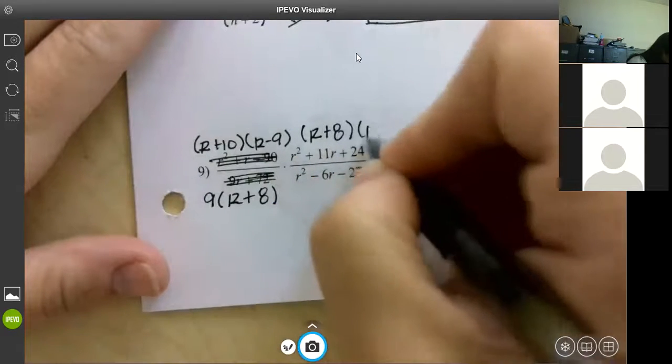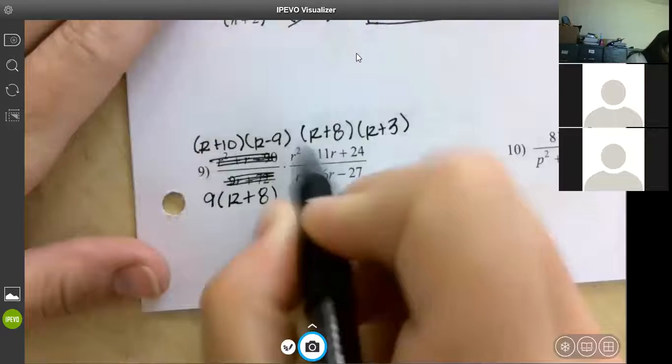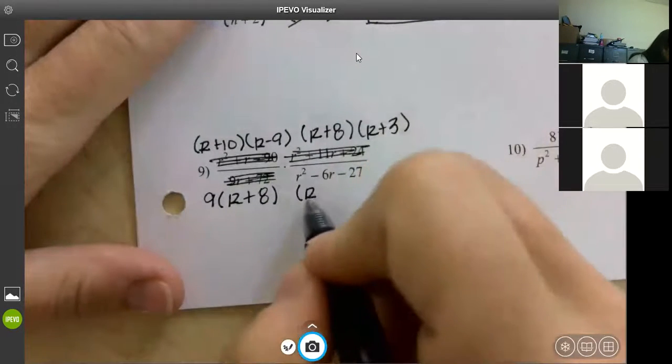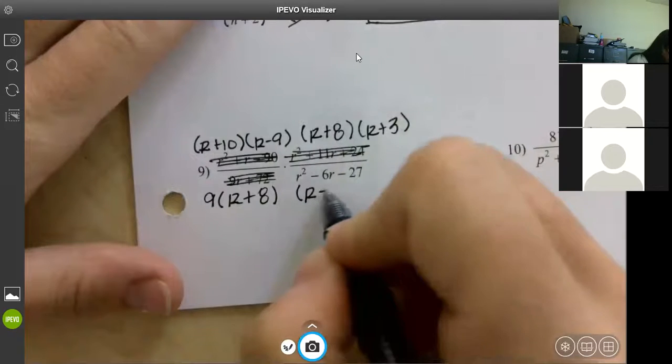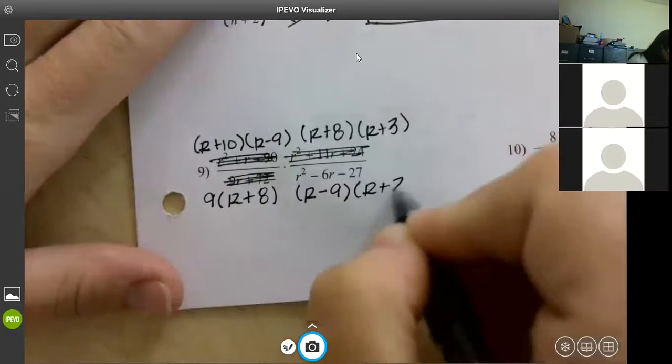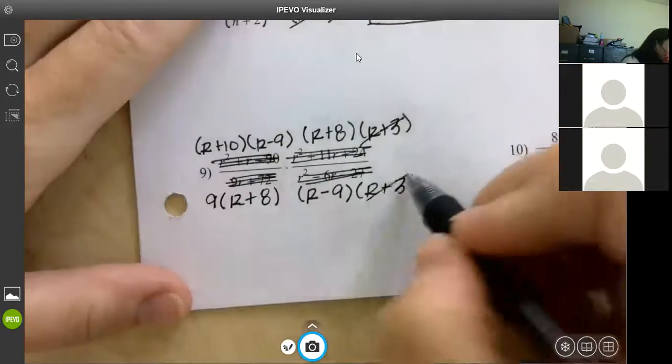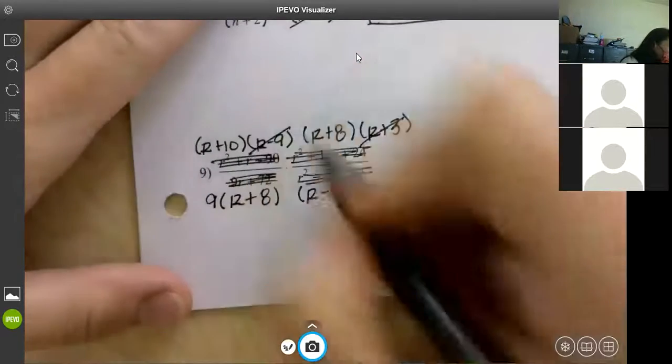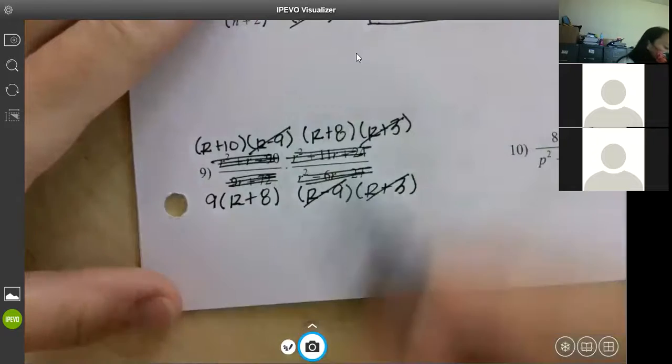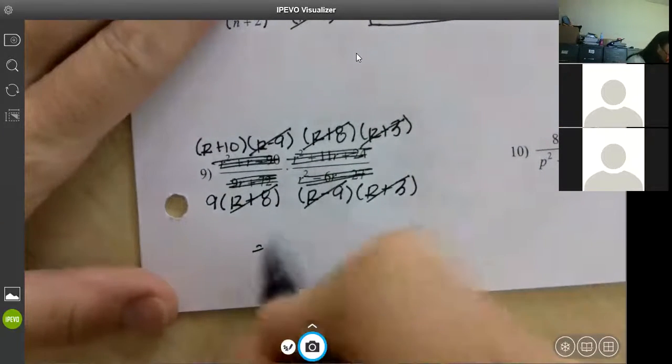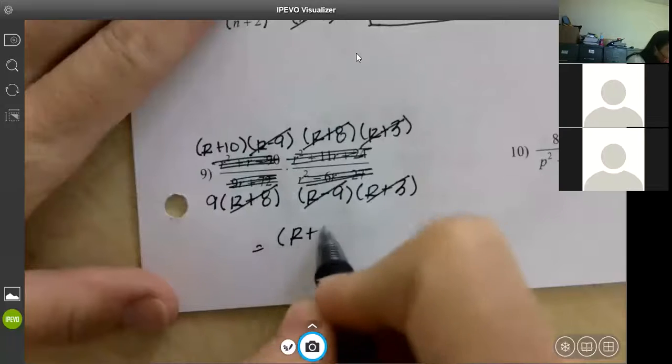And then anything the same on the top and the bottom we're going to mark out. So what can I mark out? R plus 3, R plus 8. What else? R minus 9. Anything else I can cancel out? What is my leftover? On the top? R plus 10. On the bottom? Nine.